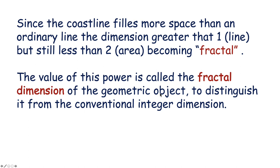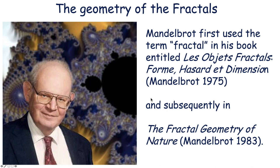The value of this power is called the fractal dimension of the geometric object, to distinguish it from the conventional integer dimension of a line — one — or an area — two. This was really the thought of Mandelbrot, who first used the term 'fractal' in his book back in 1975, written in French: 'Les Objets Fractales: Forme, Hasard et Dimension,' and subsequently in 'The Fractal Geometry of Nature' in 1983. He was a giant, a genius.